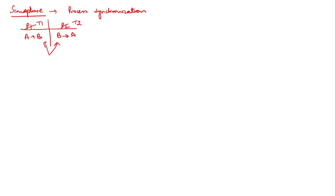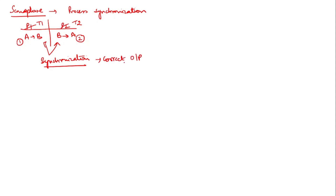I want thread T1 and T2 to execute synchronously — first T1, then T2 — not in parallel. In a multiprocessing system, processes can execute simultaneously, but to achieve correct output I need a synchronization mechanism. That synchronization mechanism is nothing but semaphores, and I'll be using two types of semaphores.